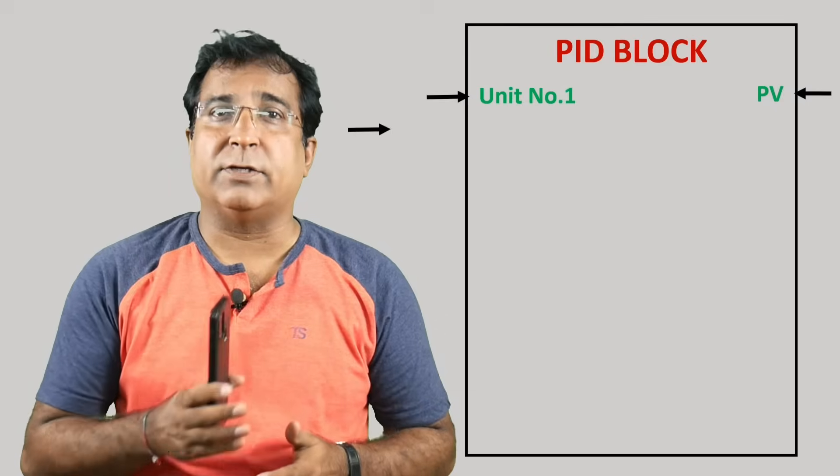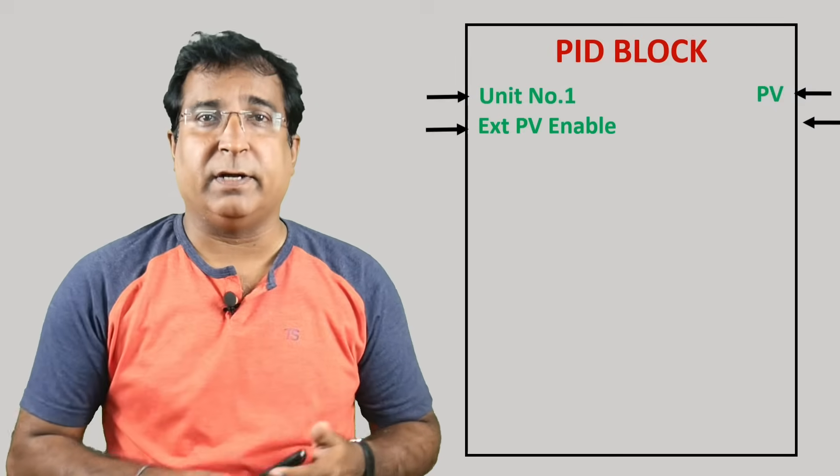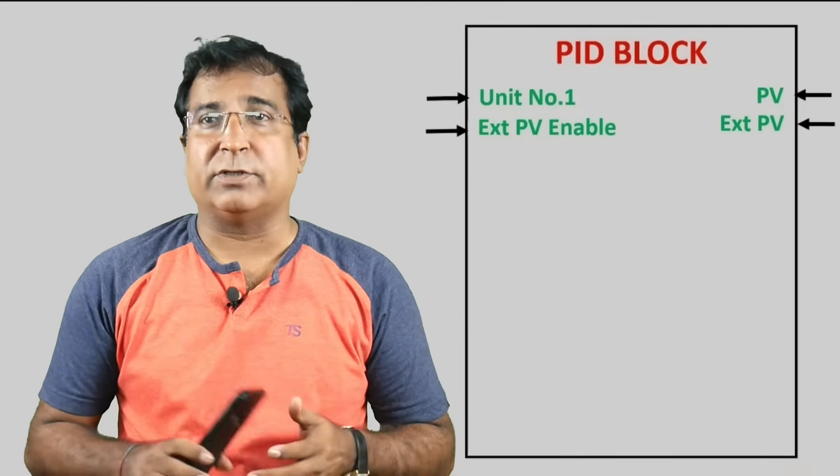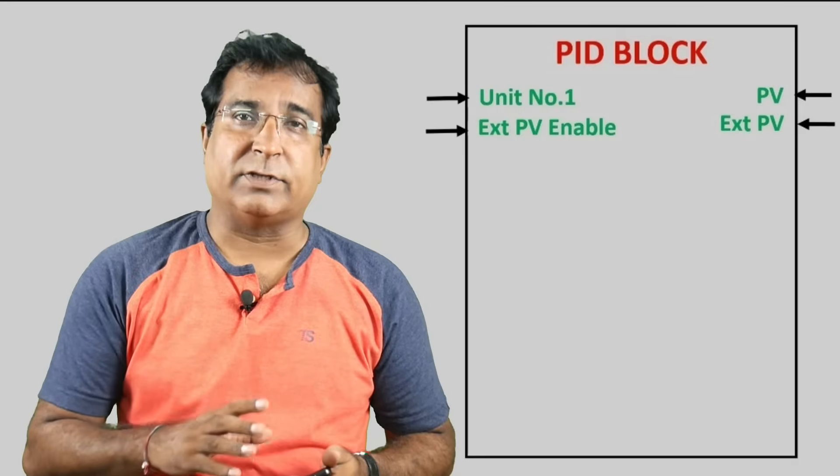Then the logical one bit has to be set on external PV enable bit. Only then external or calculated process variable can be treated as process variable.